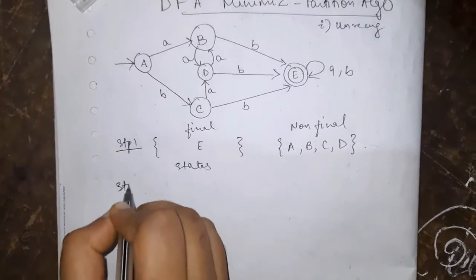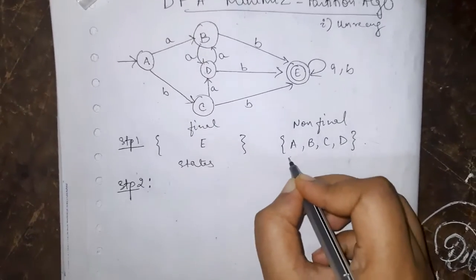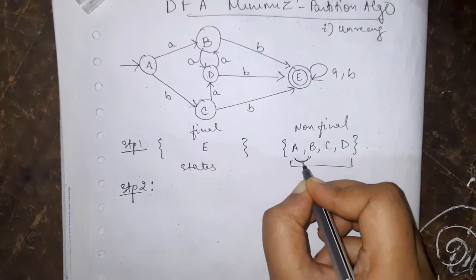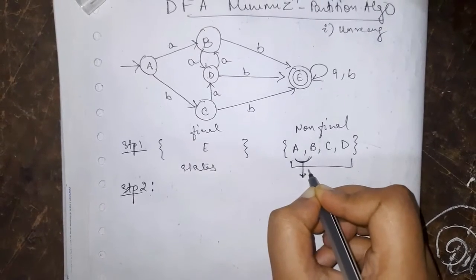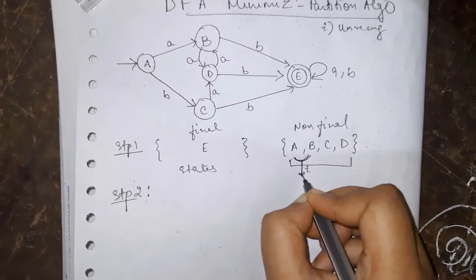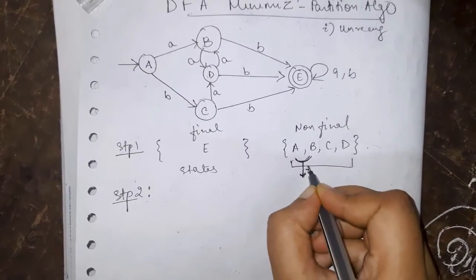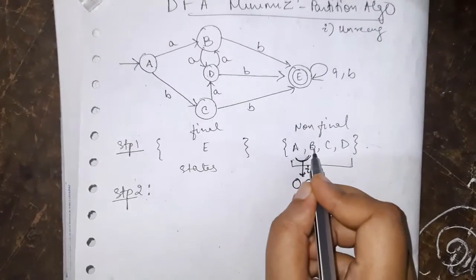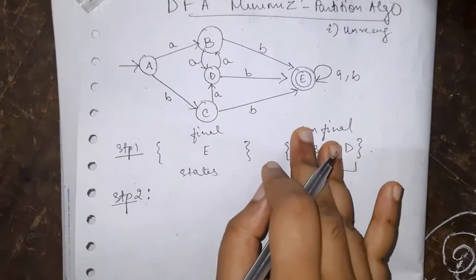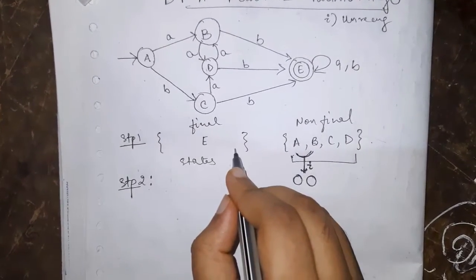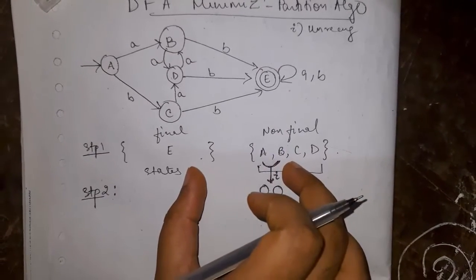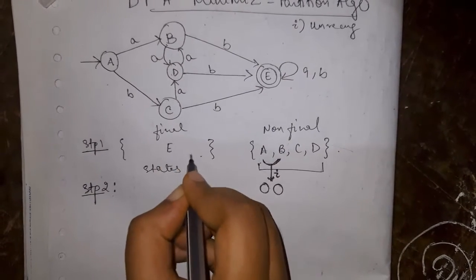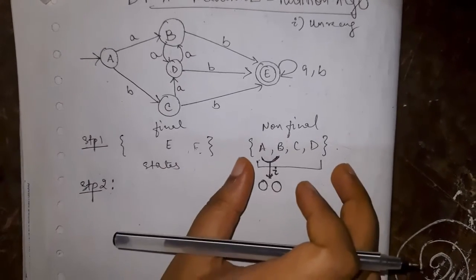Now step 2 says whatever we have in a group for any two states, if we are having transition on any input symbol, if both the transition states belong to same group then it will stay in the same group. If it belongs to another group then we will again make the partition. So here for E we do not need to check anything, but we will check for this group.